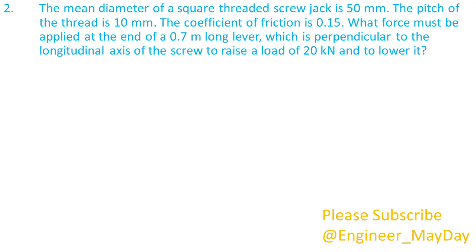Here is a second question. The mean diameter of a square threaded screw jack is 50 millimeters. The pitch of the thread is 10 millimeters. The coefficient of friction is 0.15. What force must be applied at the end of a 0.7 meter long lever, which is perpendicular to the longitudinal axis of the screw, to raise a load of 20 kilonewtons and to lower it?